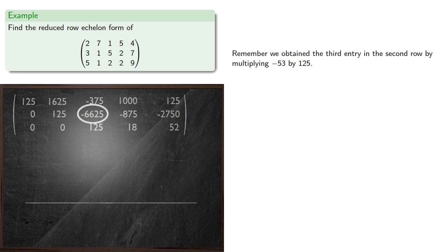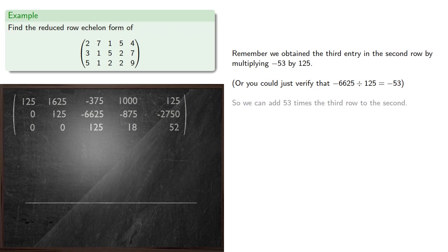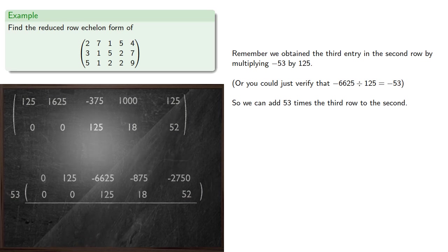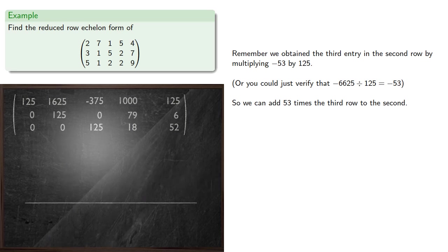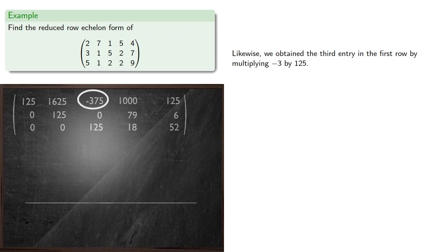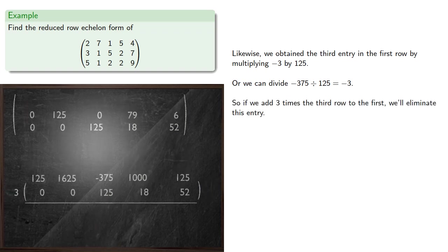Remember we obtained the third entry in the second row by multiplying negative 53 by 125. If you don't remember that, you could just verify that the entry divided by 125 is negative 53. So we can add 53 times the third row to the second to get a new second row. Likewise, we obtained the third entry in the first row by multiplying negative 3 by 125 — again, you could just divide. So if we add 3 times the third row to the first, we'll eliminate this entry.